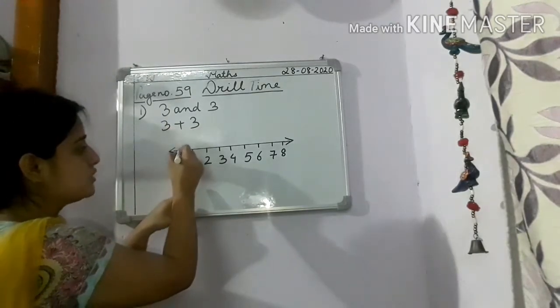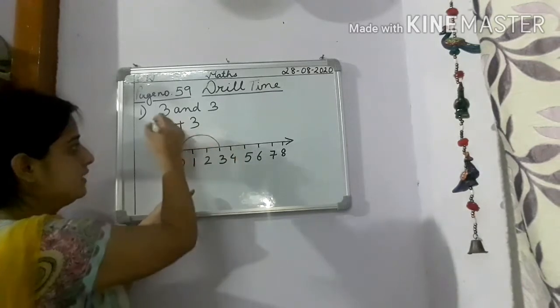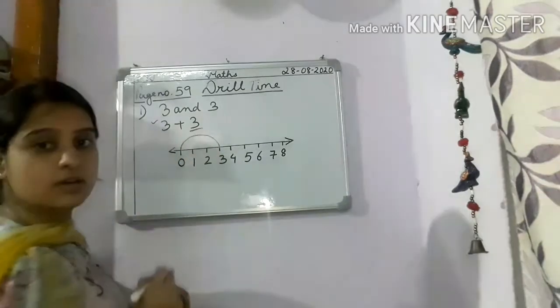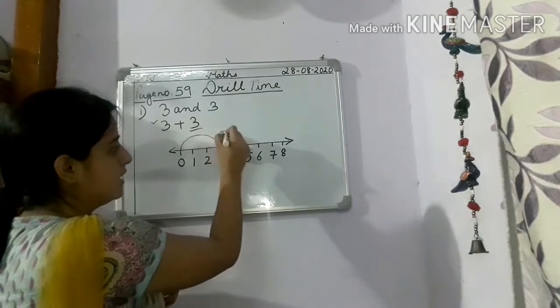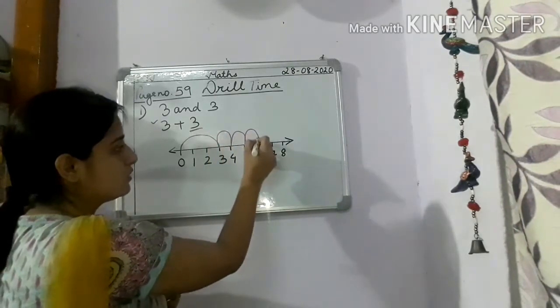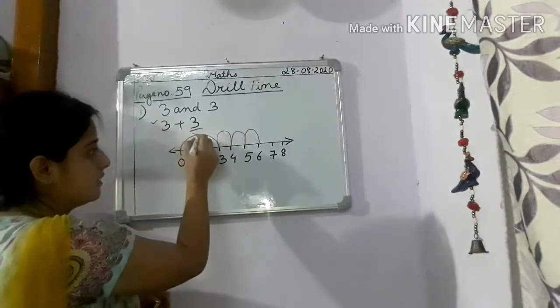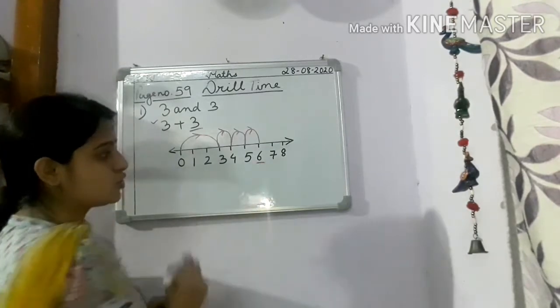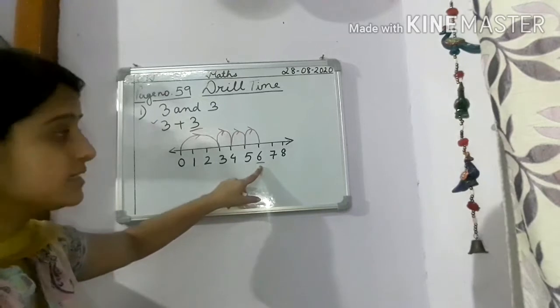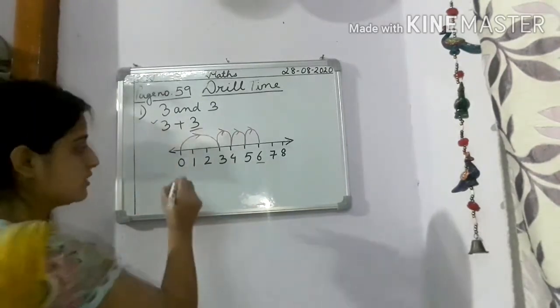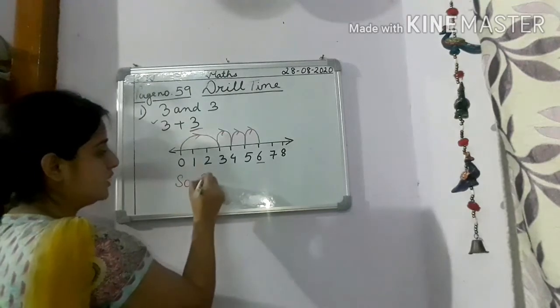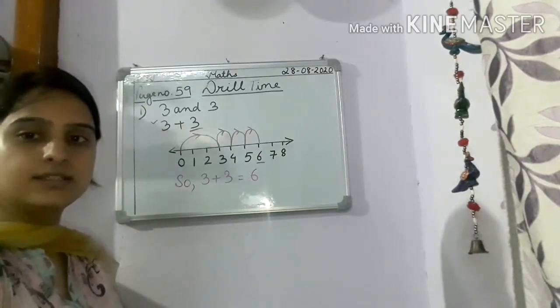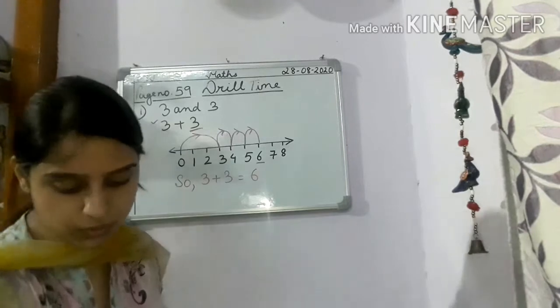So the number is already where children, from 0 to 3. The first one, 0 to 3. Now how many steps we have to move? You have to jump 3 steps. So 1, 2, 3. Then you give arrow children. Now, where did it stop? It stopped on 6. So 3 plus 3 is what? 6. Done. This is how we will do the next one.